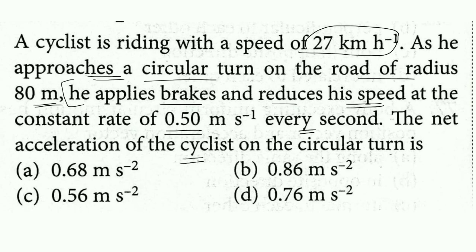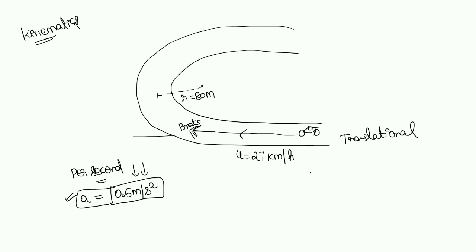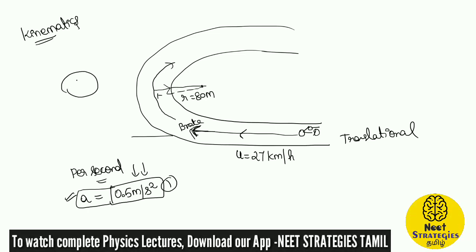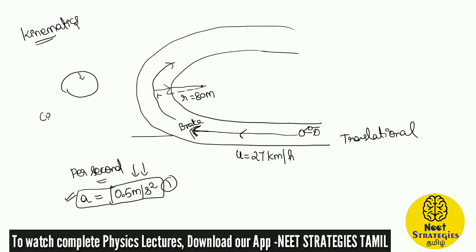The net acceleration of the cyclist on the circular turn is the question. Normally, we will develop one type of acceleration, and the second type of acceleration is — since he is crossing this circular turn, the circular path is going on. What will be the acceleration a particular object undergoes when it goes into circular motion? Yes, you are correct — it is the centripetal acceleration. Because it is a circular turn, it is a circular motion, we will experience a centripetal acceleration.